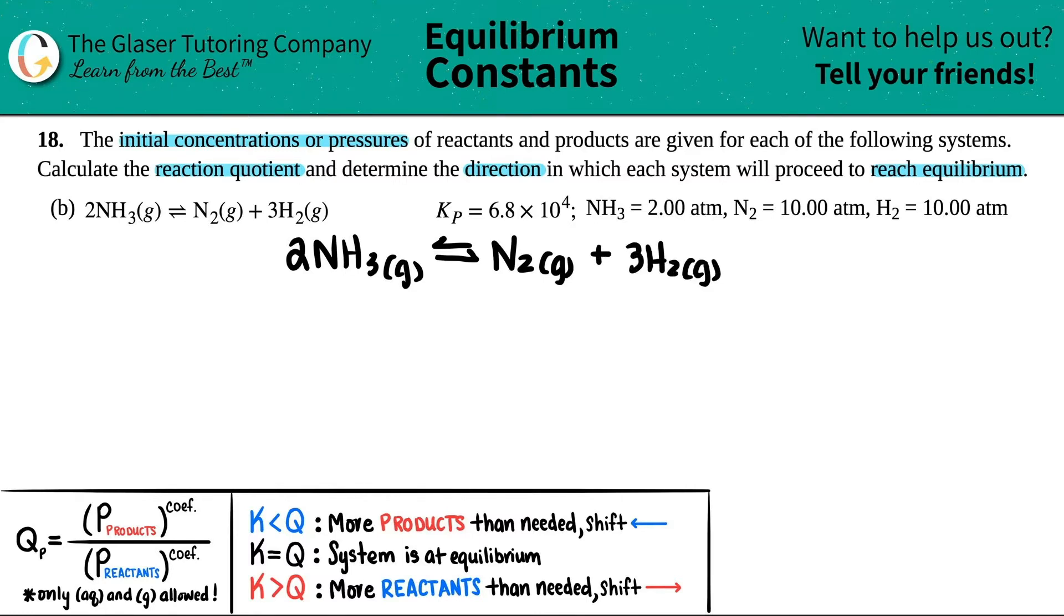The next thing I'm going to do is write out the starting values that they give us. They told us these were initial pressures. I know they're pressures because they say ATM. ATM is a unit of pressure and they give me a K_P. The P stands for pressure as well. So let's see, I got 2.00 ATM for the NH3, so I'm going to say I got 2.00 ATM here. The N2 was 10.00 ATM, so I'm going to write 10.00 ATM, and also I got 10.00 ATM over here.